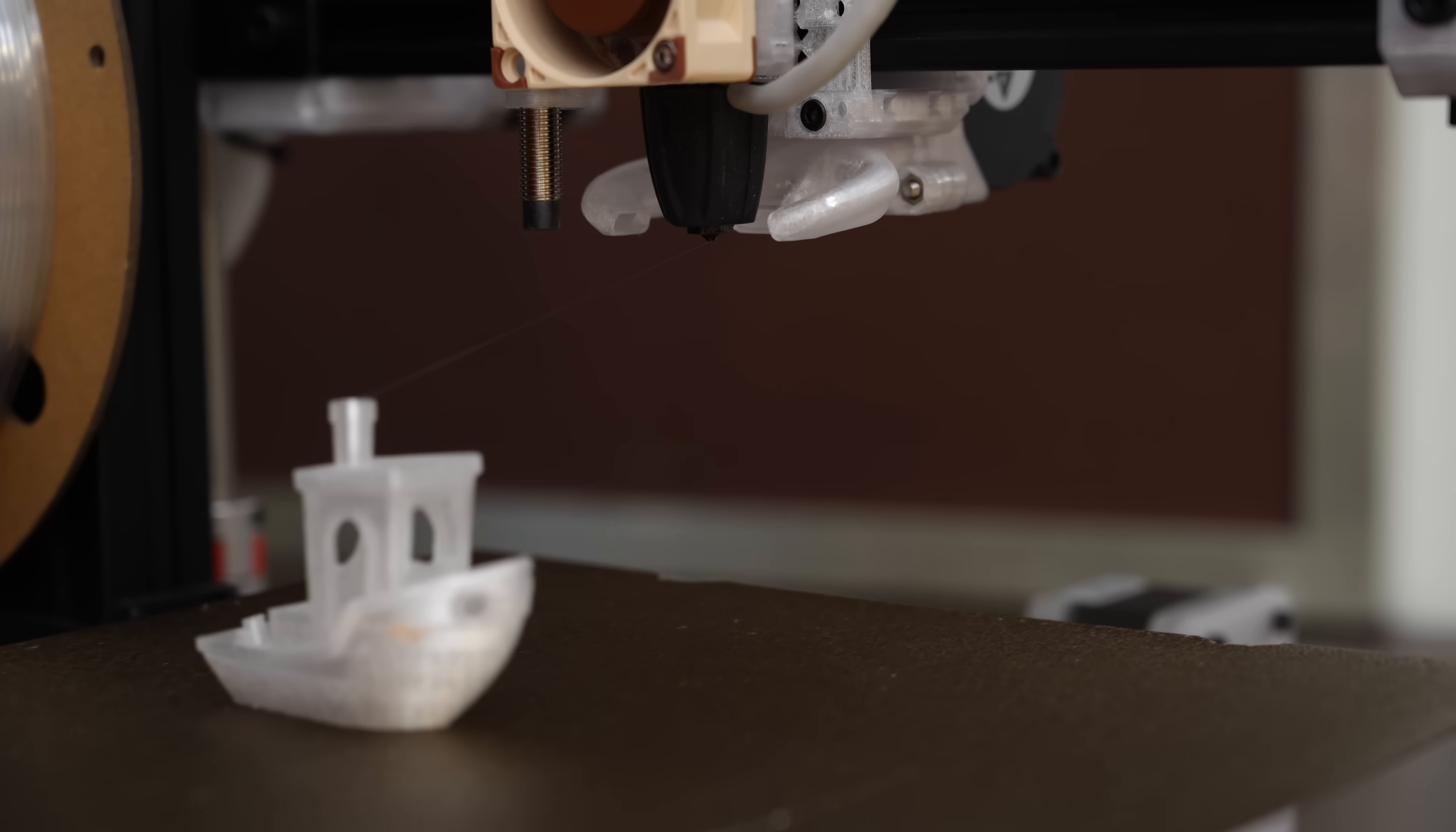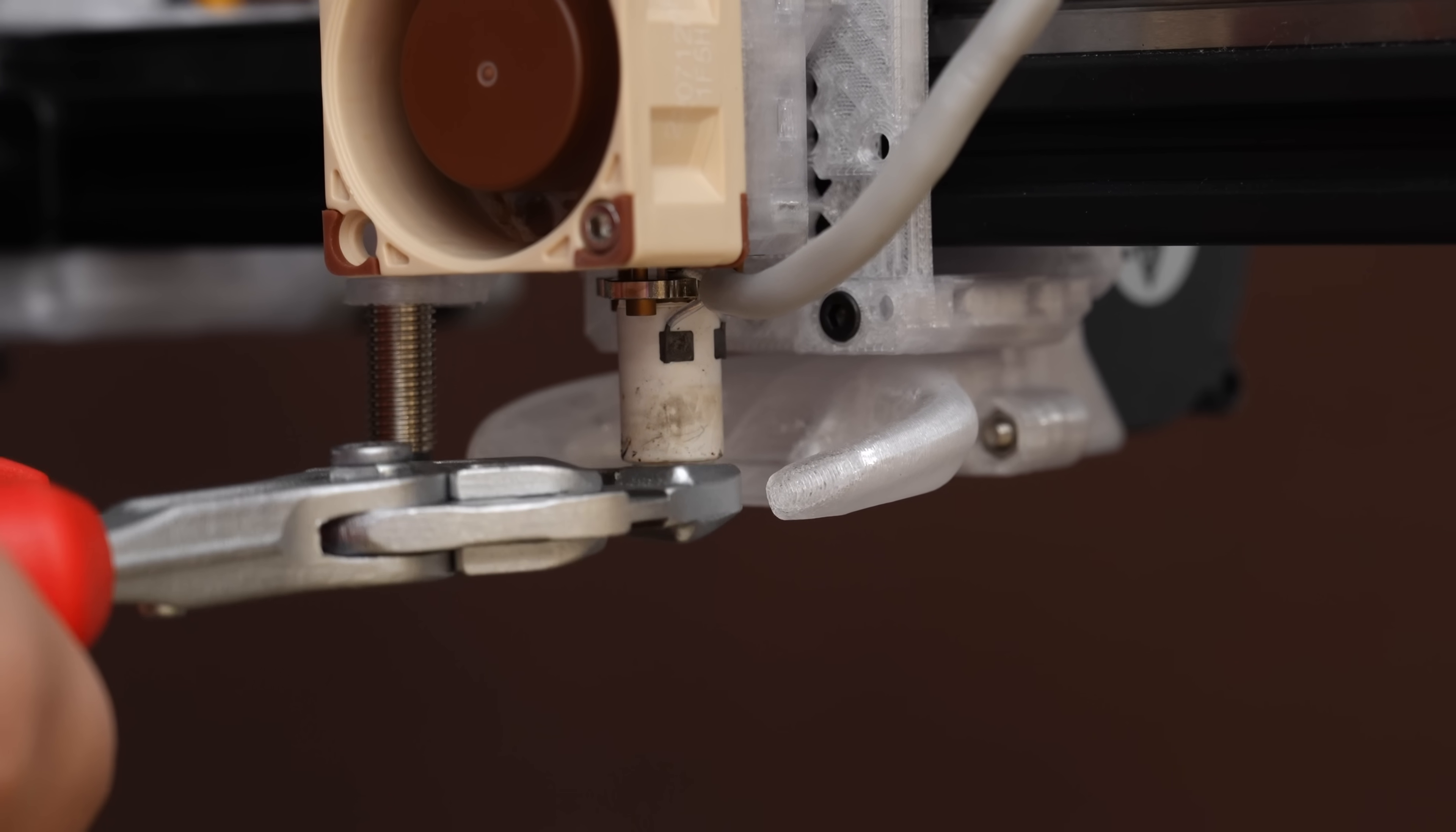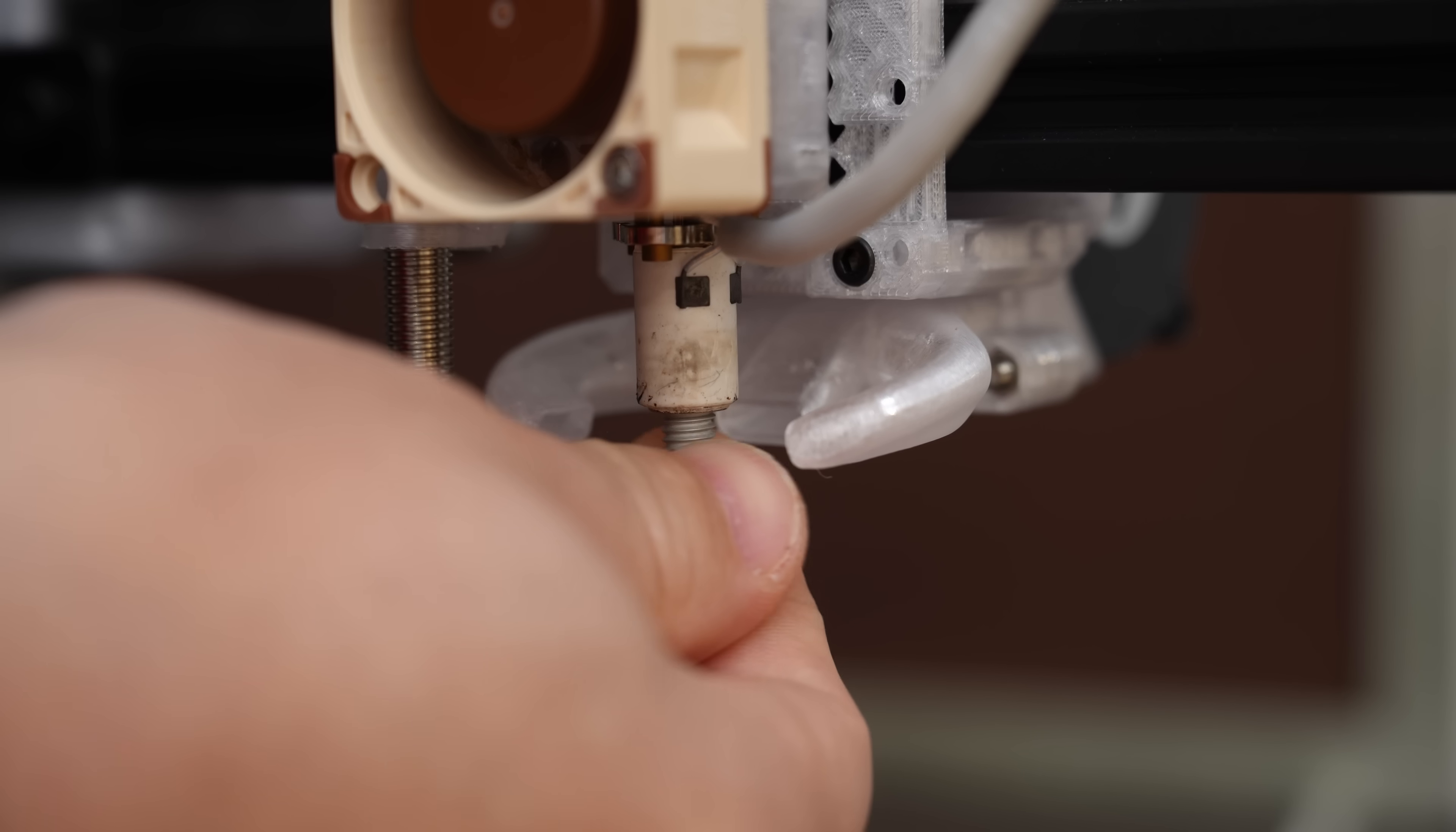All right, our print is all finished up. This is our control piece printed in clear PETG. Now let's get that nozzle changed out. We're just going to remove this sock thing, and then we'll unscrew the nozzle. Okay, we got a little melted PETG in there. That's fine. We'll just pull that off. So here goes. Look at that. It threads right in.